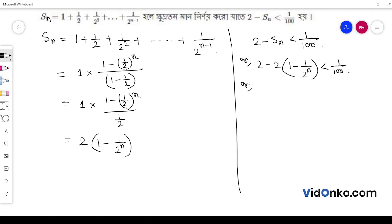We have 2 minus 2 plus 2 by 2 to the power n is less than 1 by 100. Canceling, we get 2 to the power n is greater than 200.